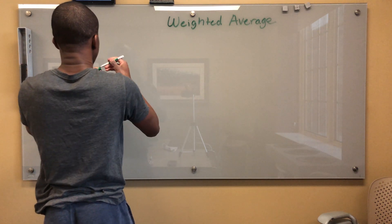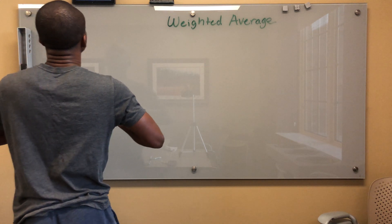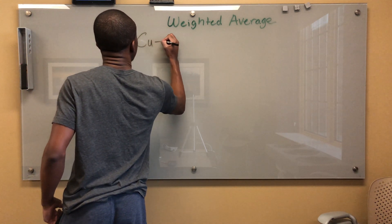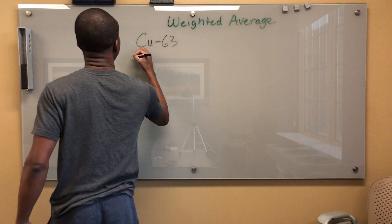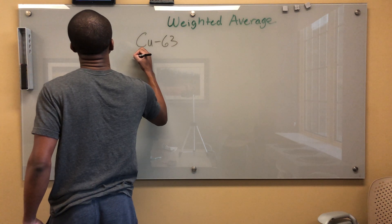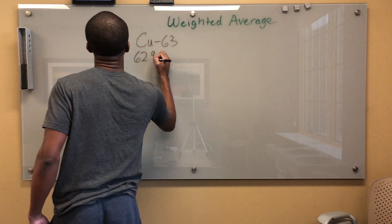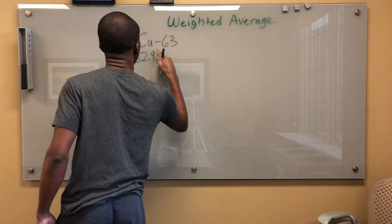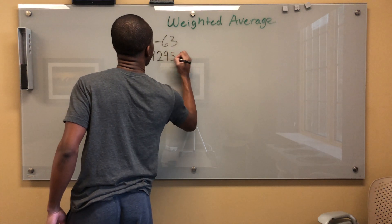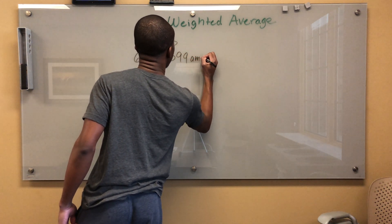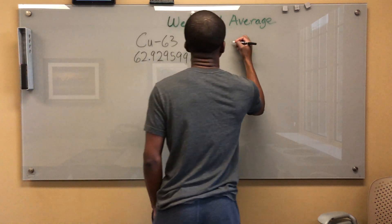So this reports as Cu-63. And I'm going to go ahead and say that the mass, the atomic mass, this one is 62.929599 AMU, right? And this one is Cu-65.